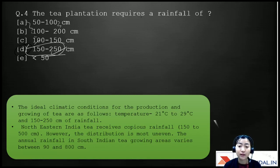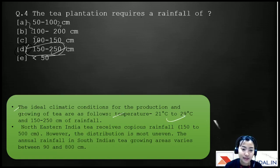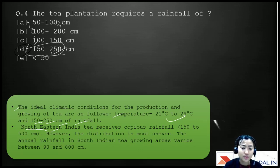The ideal climate conditions for tea: temperature of 21 to 29 degrees Celsius and 150 to 250 centimeters of rainfall. Northeastern states of India receive 150 to 500 centimeters of rainfall, though distribution is uneven. South Indian tea-growing areas can receive 90 to 800 centimeters — tea actually needs a high amount of rainfall.